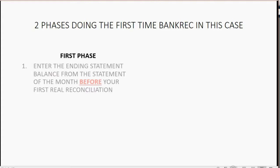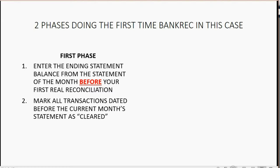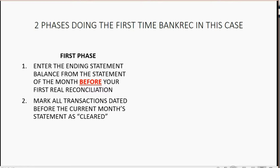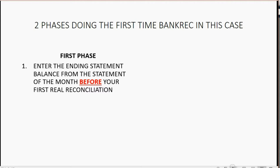The first phase involves entering the ending statement balance from the statement of the month before your first real reconciliation, then marking all transactions dated before the current month statement as cleared, then clicking Reconcile Now and entering an adjustment. Let me demonstrate the first phase and then the other phases step by step.